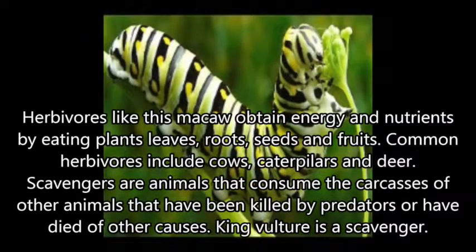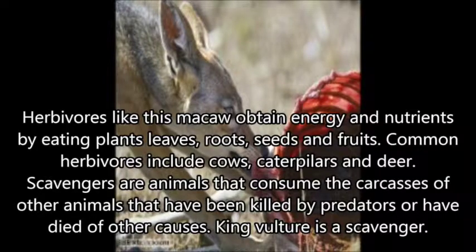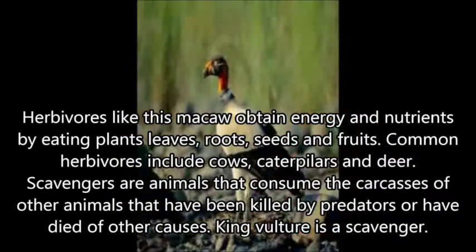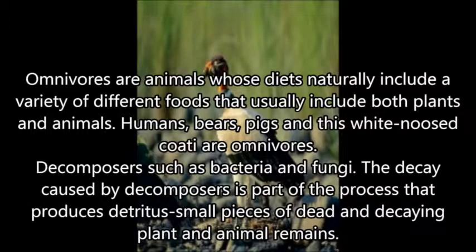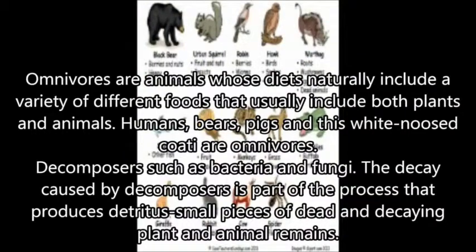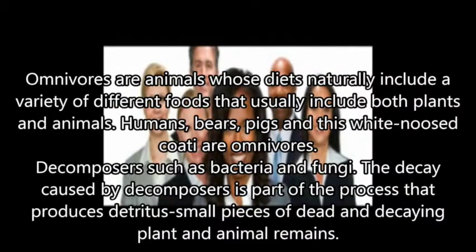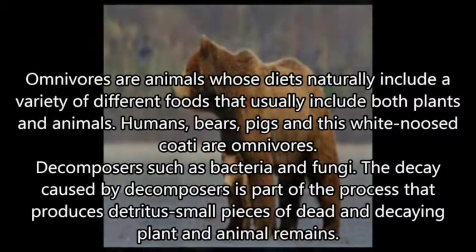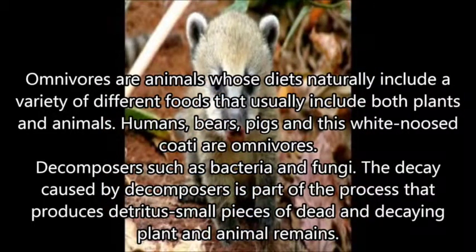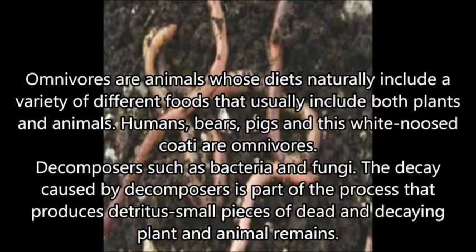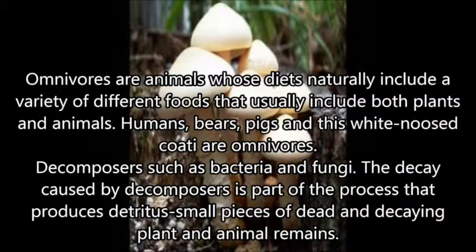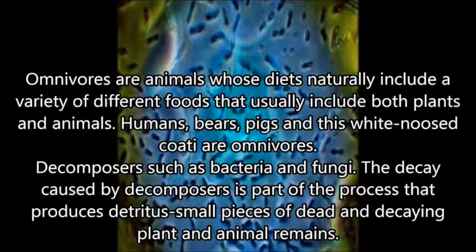Scavengers are animals that consume the carcasses of other animals that have been killed by predators or have died for other causes. Vultures are scavengers. Omnivores are animals whose diets naturally include a variety of different foods that usually include both plants and animals. Humans, birds, pigs, and the white-nosed coyote are omnivores. Decomposers, such as bacteria and fungi, decay plant and animal remains into small pieces.